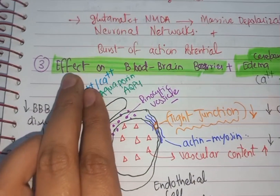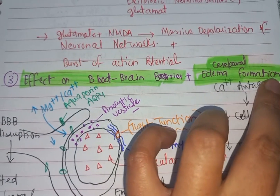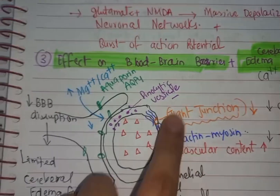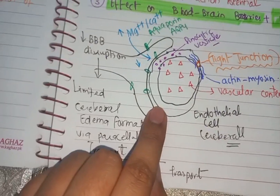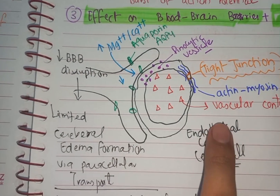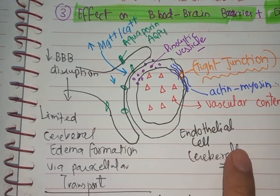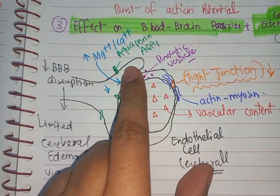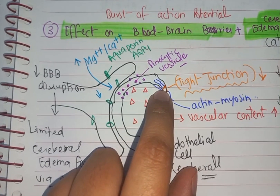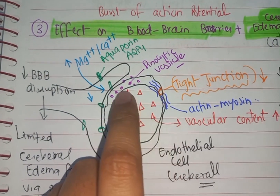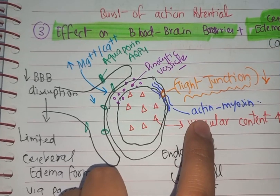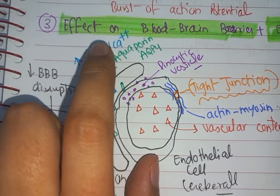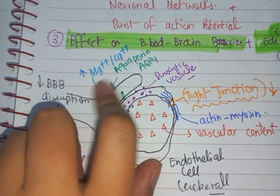The third effect is on the blood-brain barrier and cerebral edema formation. As we know, in the eclamptic patient there is cerebral edema. In the cerebral endothelial cell, the tight junctions of the blood-brain barrier are disturbed — they have increased permeability, which causes release of cellular contents out of the cell and leads to cerebral edema formation.